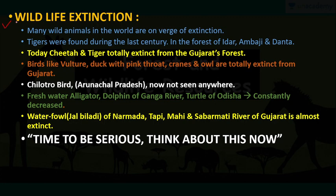The second topic of the day is the wildlife extinction crisis. Wildlife exchange cell refers to animals that are coming to an end — their species are so rarely available in India or in the world. Tiger were found during the last century in forests of Idar, Ambaj and Dada. Today, cheetah and tiger are totally extinct from the Gujarat forest. Our Prime Minister Modi brought cheetahs from Africa, but tigers are completely extinct from Gujarat.